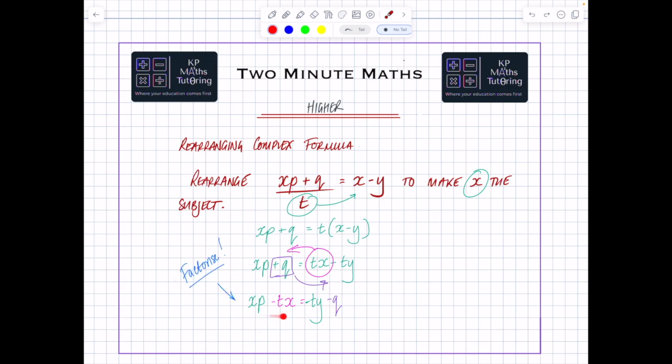And this is what you need to remember: you have to factorize to make just one of the x's here. So what value is in both here? Well, there's an x in both, so I stick that on the outside of my brackets. How do I get x to xp? I times it by p. How do I get to x to minus tx? I times it by minus t. So that left-hand side becomes factorized like that. Minus ty minus q stays the same.